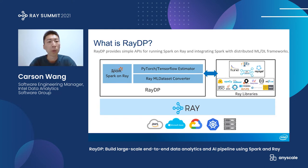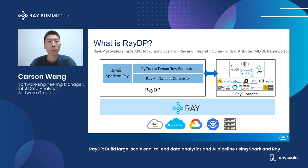However, we noticed there are also use cases that are using Spark as the major data preprocessing framework in their pipeline. So we created the RayDP project to provide simple APIs for running Spark on Ray, and also integrating Spark with distributed machine learning and deep learning frameworks. When we run Spark on Ray, we treat Ray as a resource manager of Spark, and we run all the Spark processes in Ray's actors. This makes Spark just like a native library on Ray.